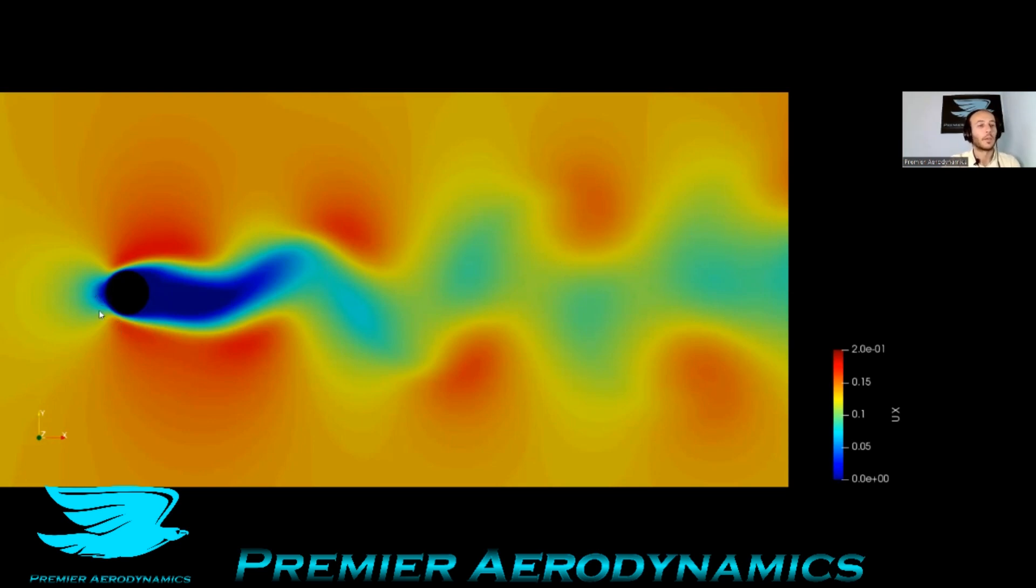but then, and the stagnation, but then past the boundary layer, you then get this acceleration. And that's what causes this vorticity to begin with.